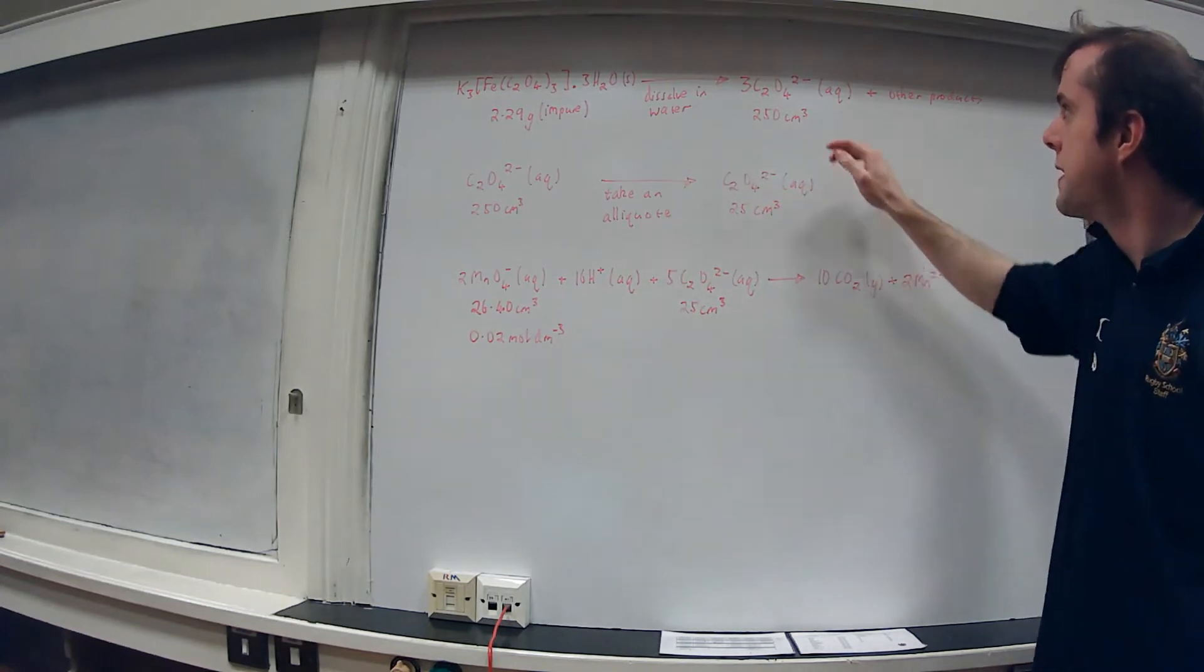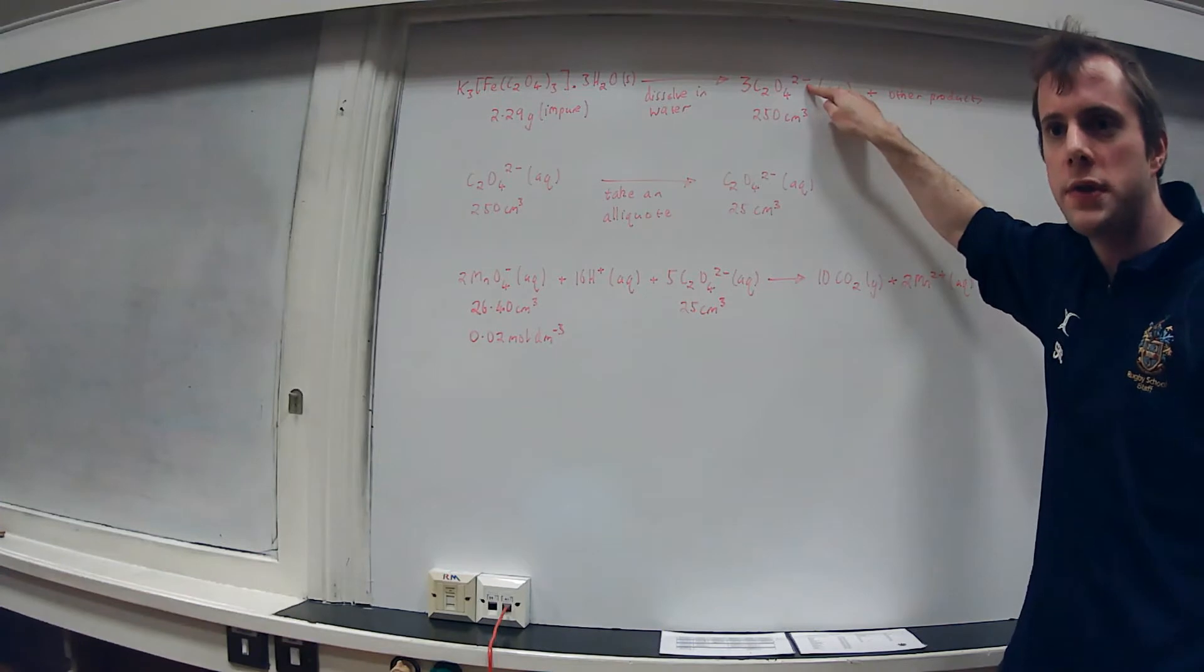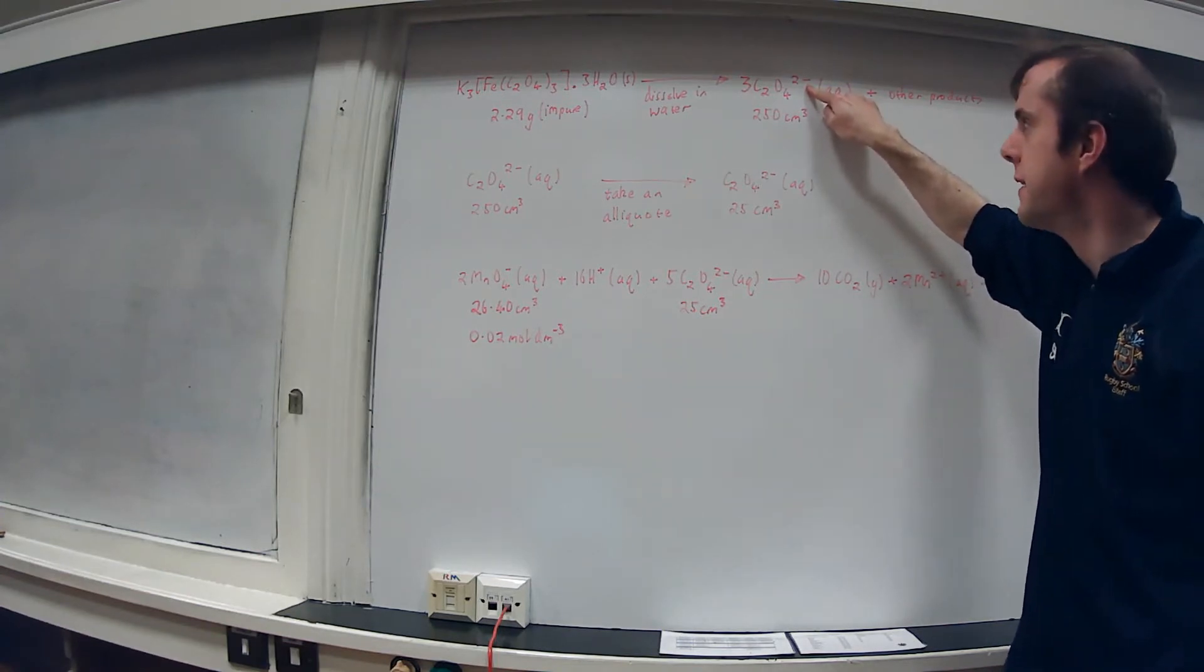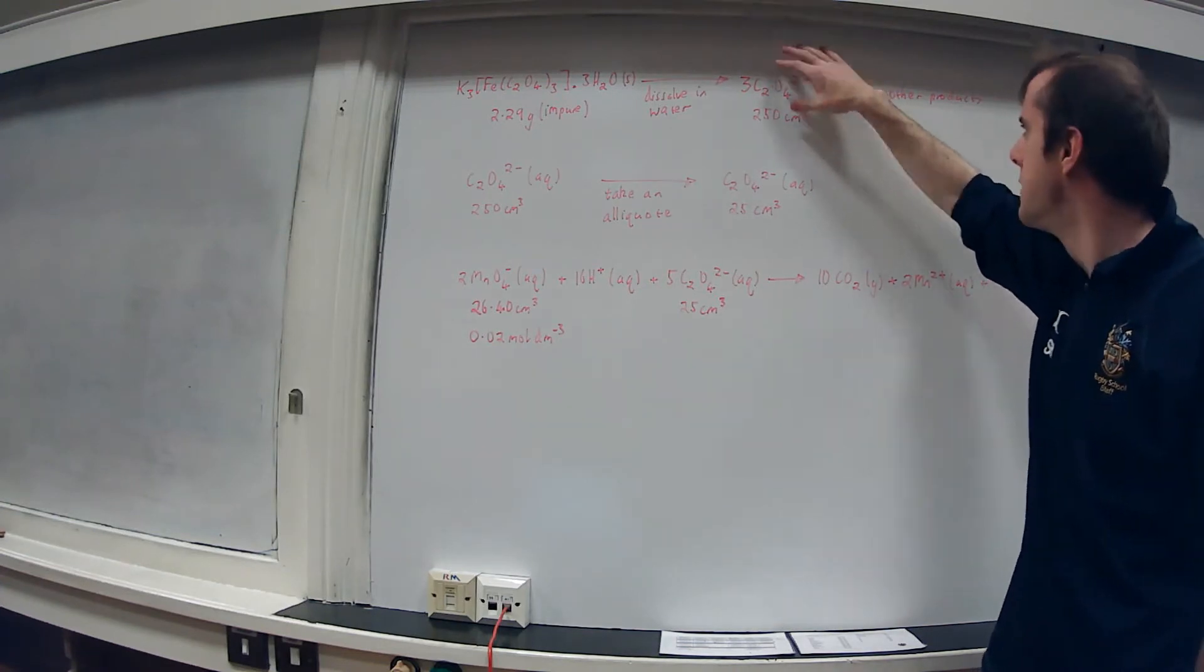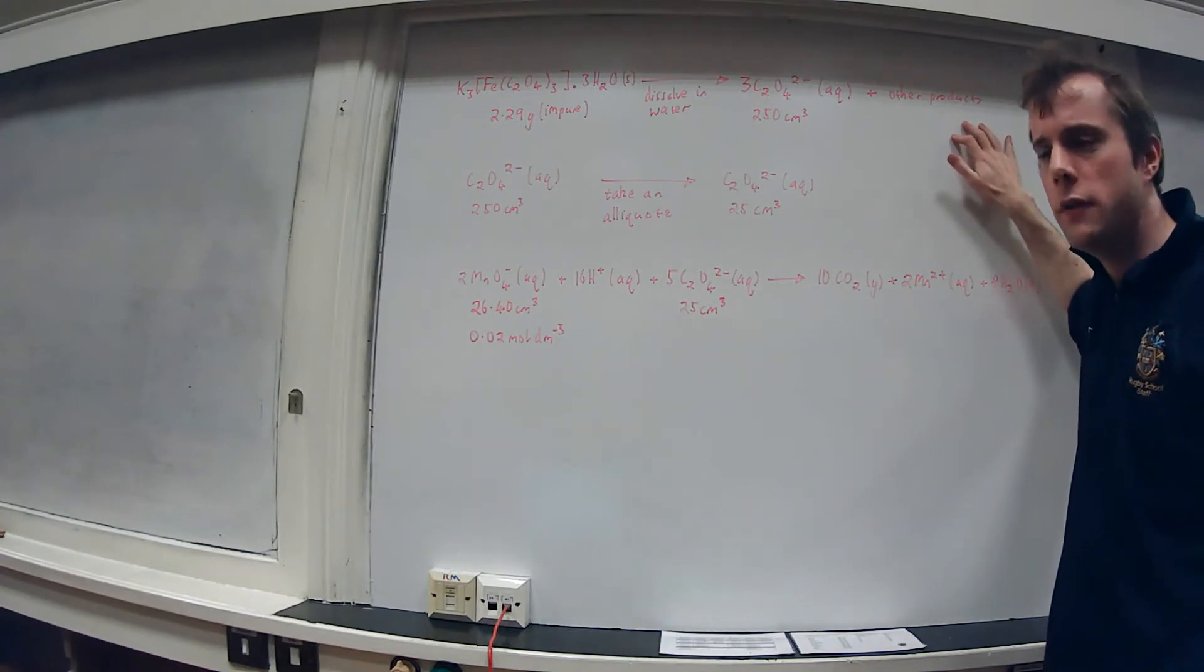The question obviously involves this ion C2O4 2- which is called oxalate or ethanedioate. So just to simplify things, that's the only thing I need to include in those products. I've written other products here, we don't need to worry about those, no need to over complicate.